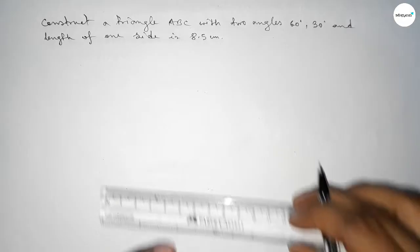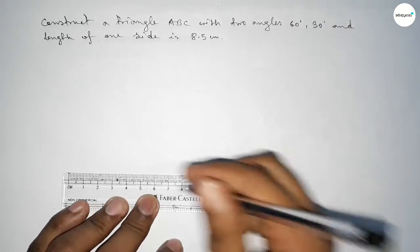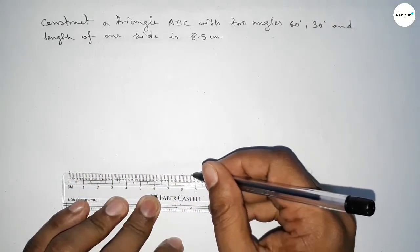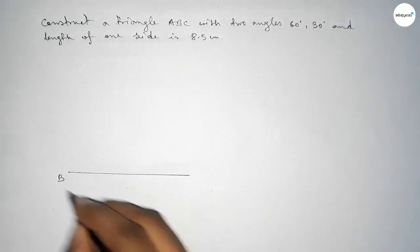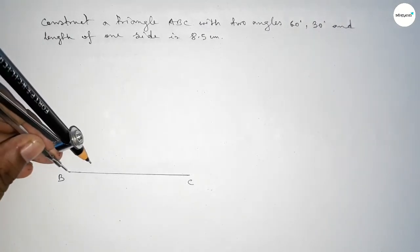First of all, we have to draw a line of length 8.5 centimeters. So this is an 8.5 centimeter line, taking point B here and point C here. Now drawing 60 degree angle at point B.